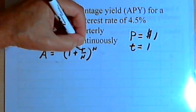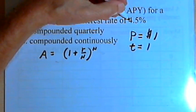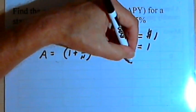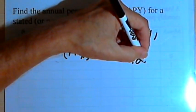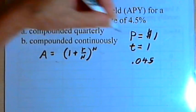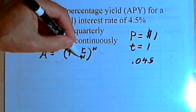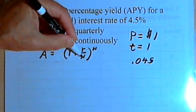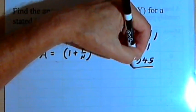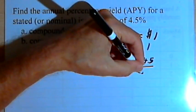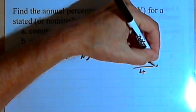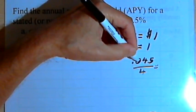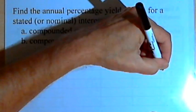Remember, r is the interest rate, the annual interest rate. If we state that as a decimal, it's 0.045. And n is the number of compounding periods per year. It's compounded quarterly, so n is 4. So we just want to divide 0.045 by 4 and we get 0.01125.